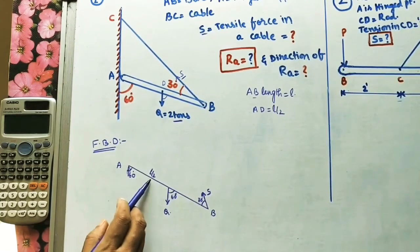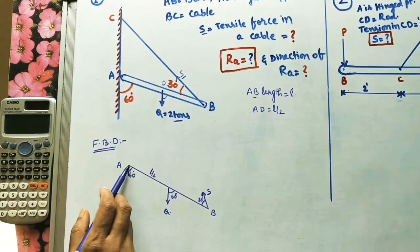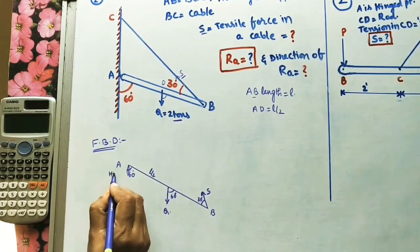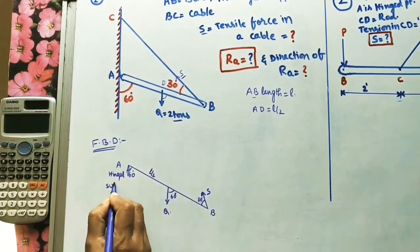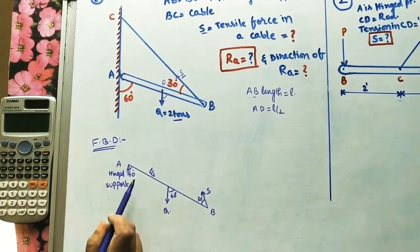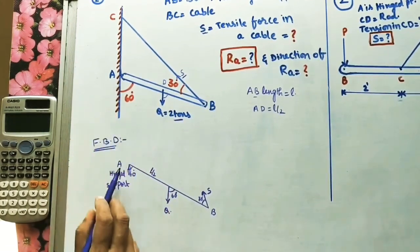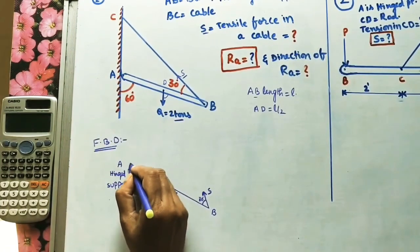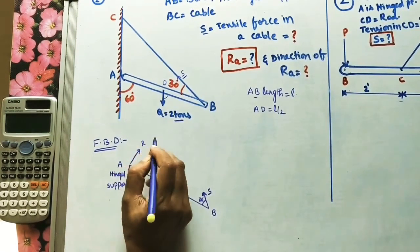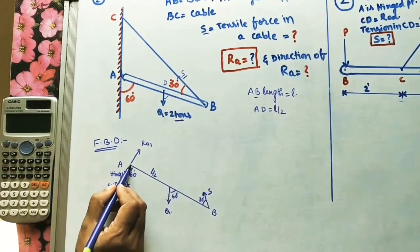We need to take two components of each force: one parallel to the inclined bar and the other perpendicular to the bar. At A, this is a hinged support. At a hinged support, two forces always act — one along the surface and one perpendicular to the surface. We don't know their directions, so we assume them initially: RA1 perpendicular and RA2 horizontal.